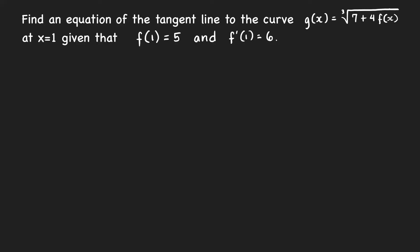In this video we're going to solve two problems about finding an equation of the tangent line to a curve at a given point. For this first problem, find an equation of the tangent line to the curve G at x equals positive 1, given that f of 1 is 5 and f prime of 1 is equal to 6.